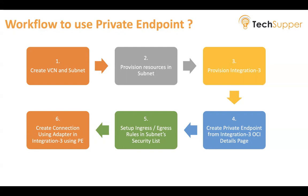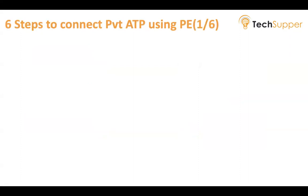The fourth step you must do: create a private endpoint. There is a new tab introduced on the Integration 3 details page where you can create the private endpoint, and only a single private endpoint is supported as of now. Then, fifth, set up some ingress and egress rules in the subnet security list. And sixth, create a connection using an adapter in Integration 3 using the private endpoint feature. These are the six steps to follow to use private endpoint.